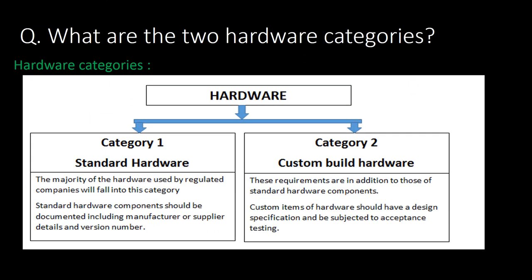What are the two hardware categories? Category 1 is standard hardware. The majority of hardware used by regulated companies falls into this category. Standard hardware components should be documented including manufacturer or supplier details and version number. Category 2 is custom-built hardware. Custom items of hardware should have a design specification and be subjected to acceptance testing.